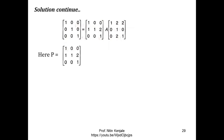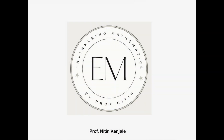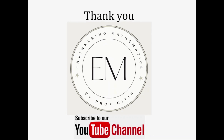Now coming to A inverse — from this equation we know what P and Q are. To find A inverse, all we have to do is find the product of Q and P. Q into P gives us the inverse of matrix A. I hope you understood the concept of Normal PAQ form and how to find it, as well as how to find A inverse from the Normal PAQ form. Thank you for watching. Please subscribe to my YouTube channel for more engineering mathematics videos and press the bell icon for updates.